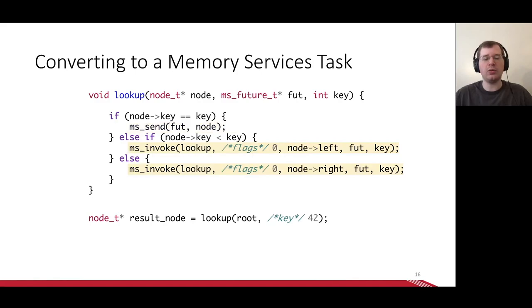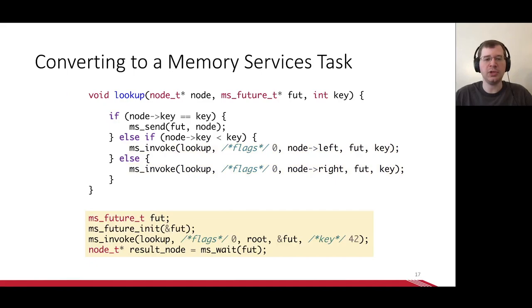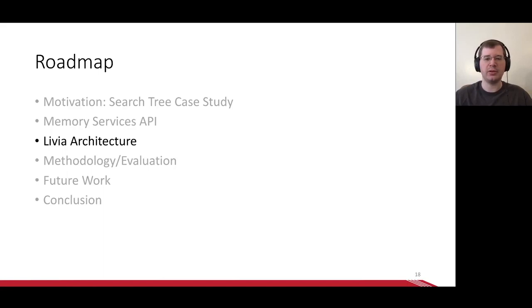Otherwise, we recurse. If we called lookup like a normal function, it would execute locally. Instead, we use msinvoke to request that the system schedules the task to execute near the child node. msinvoke takes a task function, some flags, in this case zero, and the task's arguments. Calling msinvoke recursively like this dynamically creates the task graph like the one we saw earlier. To use the task from the application, you create and initialize the future, call msinvoke, and wait for the result.